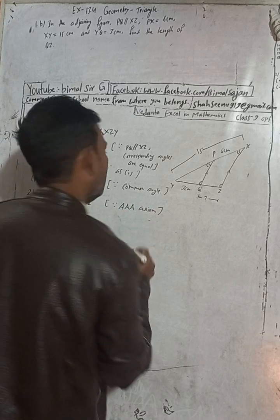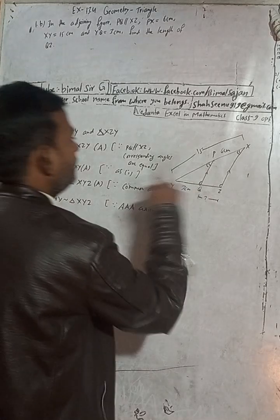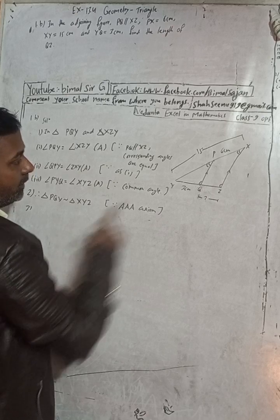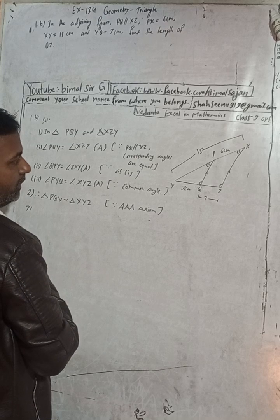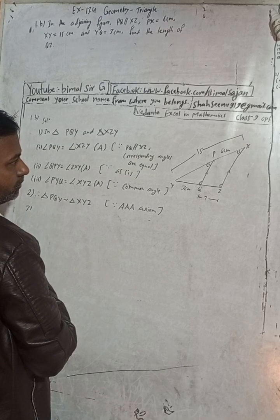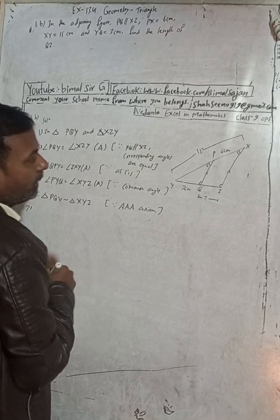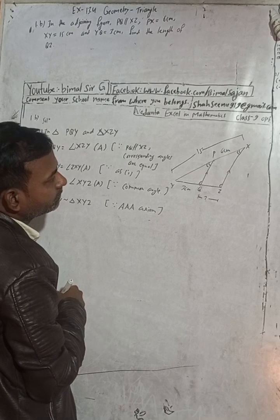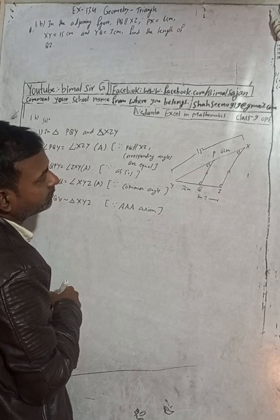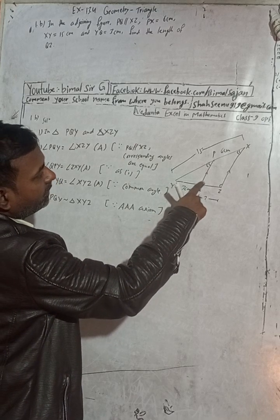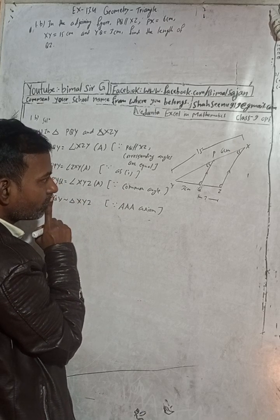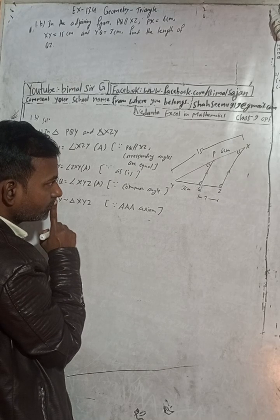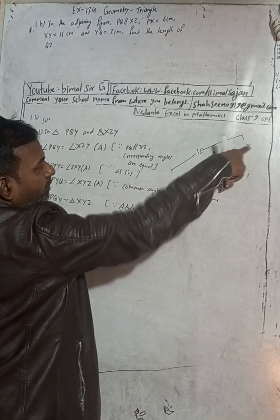Now we have the similar triangles. Our target is to find QZ. So I will use the corresponding sides of the similar triangles. I need to identify the side corresponding to QZ in the bigger triangle.